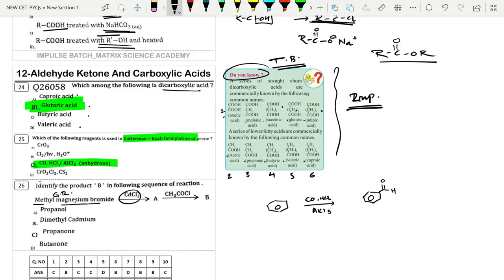Methyl magnesium bromide - Grignard reagent - reacts with CO-Cl2. Magnesium with CO-H gives methyl-CO-H. The product is acetone or propanone. Acetone or propanone - option C is the correct option, that is propanone.